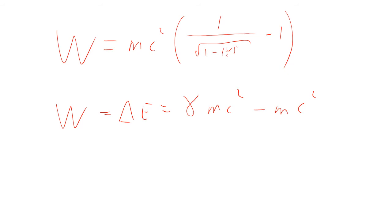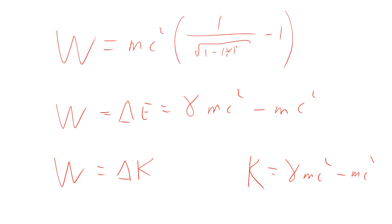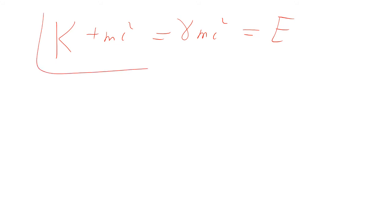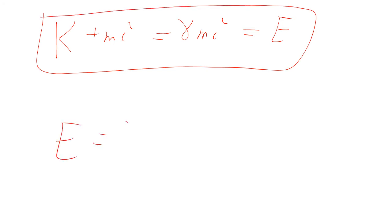This is the change in energy — the change in kinetic energy, since we started at rest and got up to some final velocity. So the kinetic energy equals gamma mc-squared minus mc-squared. That means kinetic energy plus mc-squared equals gamma mc-squared, which equals E, the total energy. So E equals gamma mc-squared, which is K plus mc-squared.